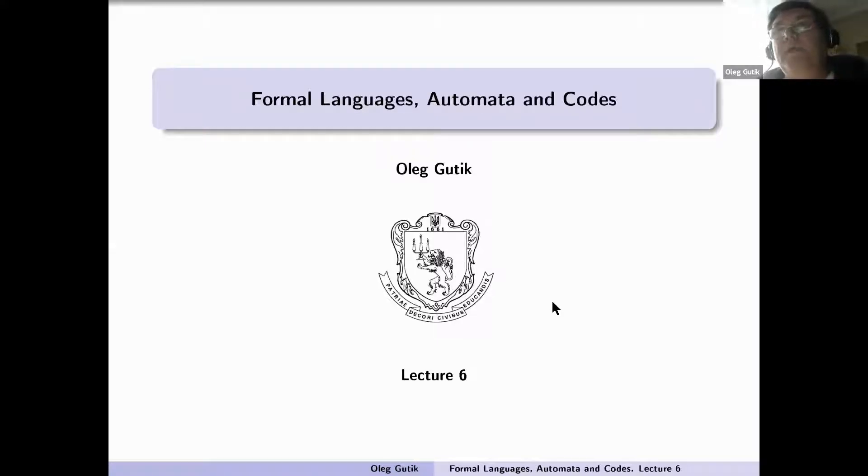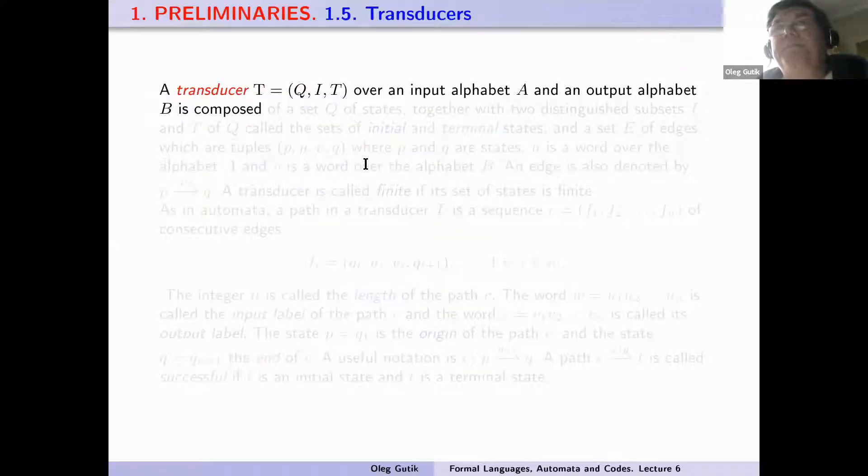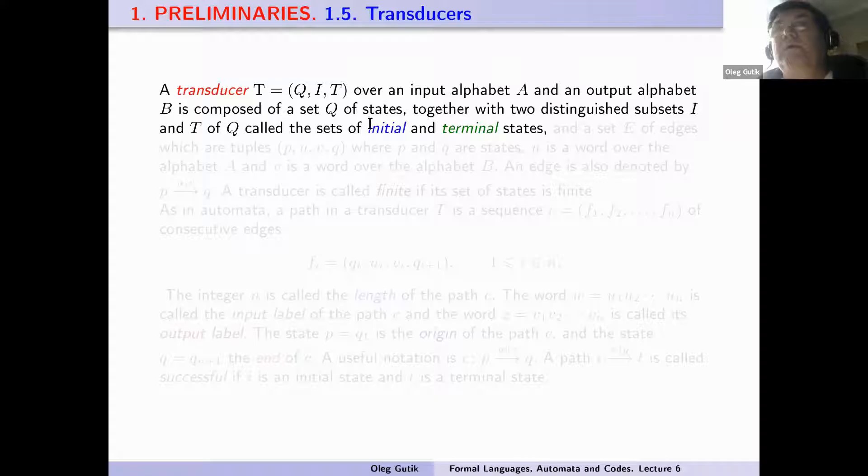Hello everyone, and next we have Lecture Number 6. This lecture is devoted to the transducer. What is a transducer? A transducer T, with input alphabet A and output alphabet B, is composed of a set Q of states together with two distinguished subsets I and T of Q, which are called the sets of initial and terminal states.